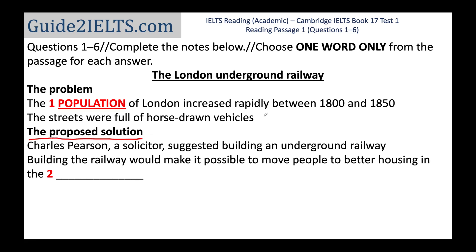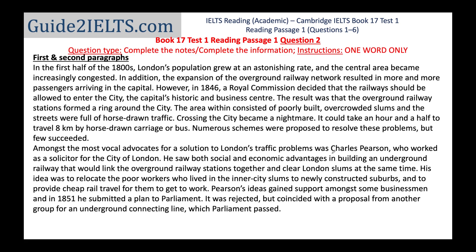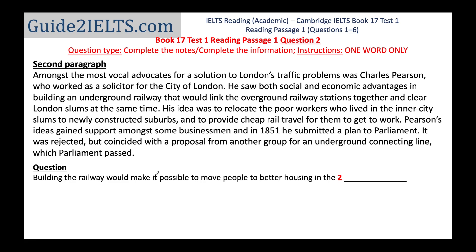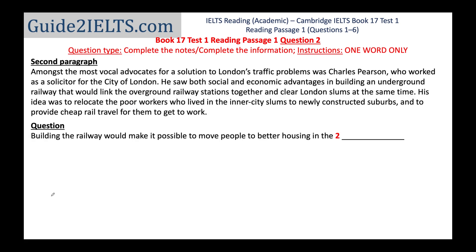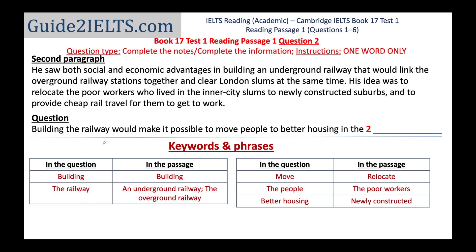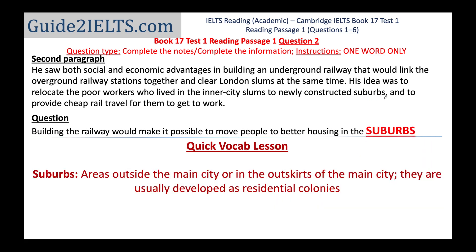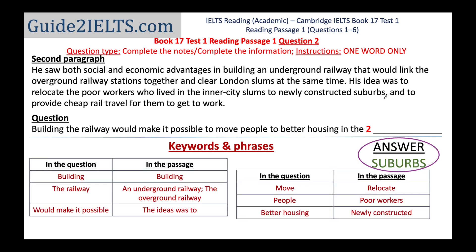Moving to the second question: between the first and second answers in the passage, I expect a mention of horse-drawn carriage and Charles Pearson. Horse-drawn carriage is mentioned at the end of the first paragraph, so I can skip the rest of that paragraph. Charles Pearson is mentioned at the beginning of the second paragraph, so I expect the second answer in the second paragraph. Reading the question: 'Building the railway would make it possible to move people to better housing in the blank.' What the question means is: where will this better housing be? The answer is 'suburbs' — slightly trickier because the information in one question sentence is spread over two long sentences in the passage.